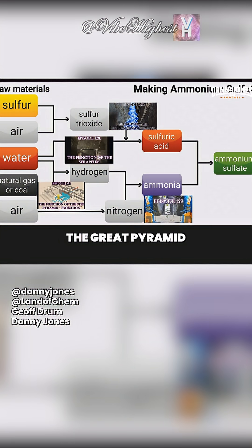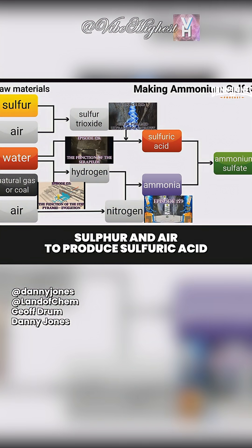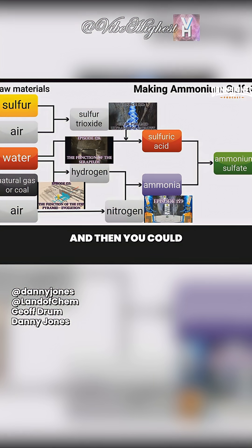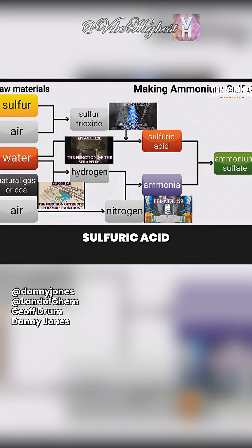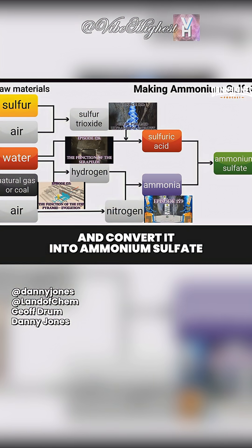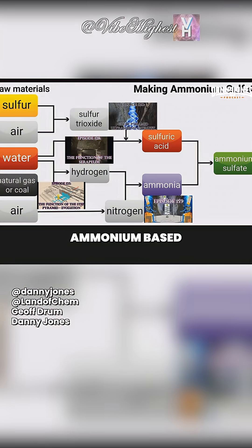The Great Pyramid used sulfur and air to produce sulfuric acid. You could then take those two products — sulfuric acid and ammonia — and convert them into ammonium sulfate, which is an ammonium-based fertilizer compound.